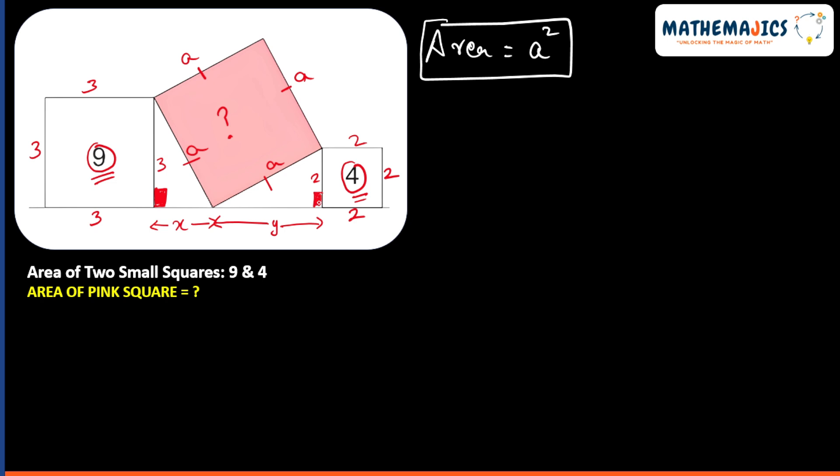Using the first right triangle, I will apply Pythagorean theorem and we will get 3² + x² = a², where a is the hypotenuse. From the second right triangle we will get 2² + y² = a². Now if you look at these two equations, the right side is same for both of them.